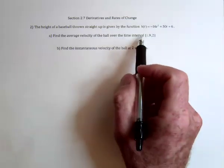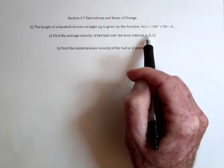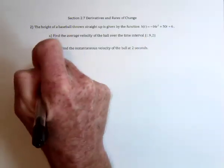In order to find the average velocity over this time interval, we need to substitute both of these times into the function and find out the two heights.